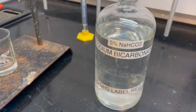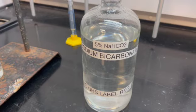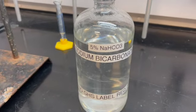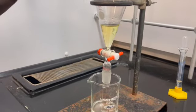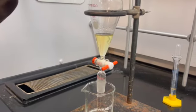We are going to add 15 milliliters of 5% sodium bicarbonate, also known as NaHCO3, into our separatory funnel, in which we will then shake and open, shake and open.